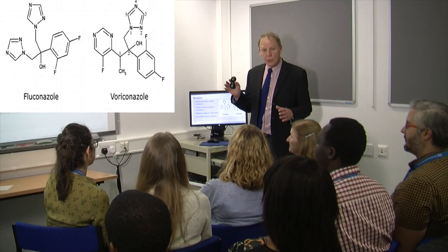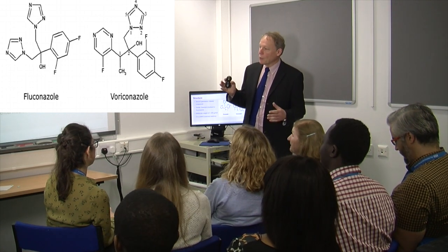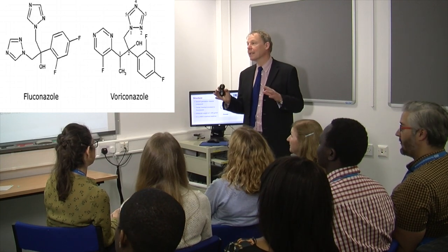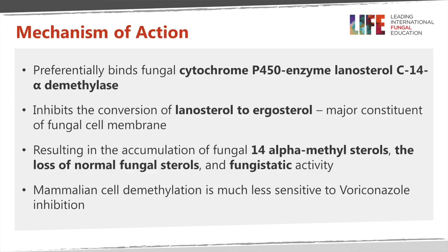Voriconazole is a second generation triazole. Its chemical structure is fairly similar to fluconazole but it has very different kinetics. It has three fluoride atoms on it and it's now a WHO essential medicine, so this should be in your pharmacy. It binds to the fungal P450 enzyme lanosterol C14 alpha demethylase, which is the same target as all the other azoles.